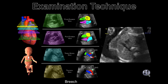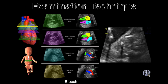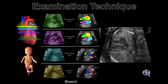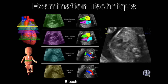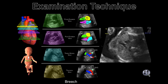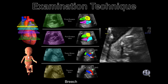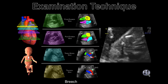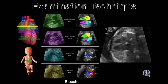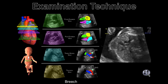When the examiner directs the ultrasound beam in a transverse plane through the upper abdomen to the neck, the following views are obtained from the cardiovascular system. 1. The four-chamber view. This contains the right atrium and ventricle, the left atrium and ventricle, the interventricular and interatrial septa, right and left atrial and ventricular walls, and the foramen ovale moving within the left atrium.